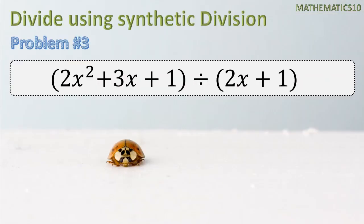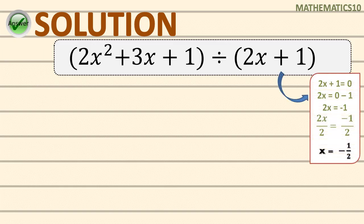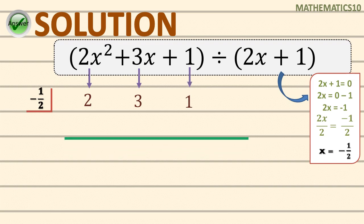For our third example, we have 2x squared plus 3x plus 1 divided by 2x plus 1. The dividend is already arranged in decreasing order. To find the value of x, we set 2x plus 1 equal to 0 and apply properties of equations, giving us x equals negative 1 half. We list the numerical coefficients of our dividend: positive 2, positive 3, and positive 1.